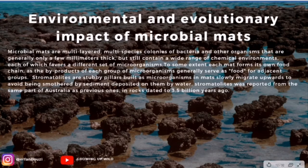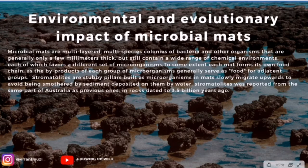Stromatolites are stubby pillars built as microorganisms in a mat slowly migrate upwards to avoid being smothered by sediment deposited on them by water. Stromatolites were reported from the same part of Australia as previously known ones, in rocks dated to 3.5 billion years ago. In modern underwater mats, the top layer often consists of photosynthesizing cyanobacteria which create an oxygen-rich environment, while the bottom layer is oxygen-free and often dominated by hydrogen sulfide emitted by the organisms living there.